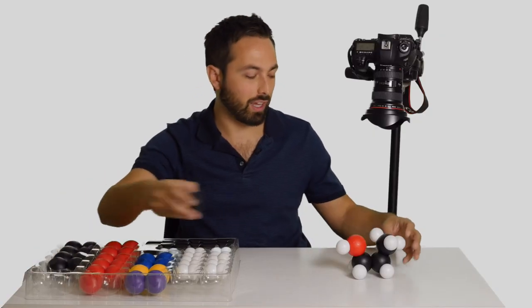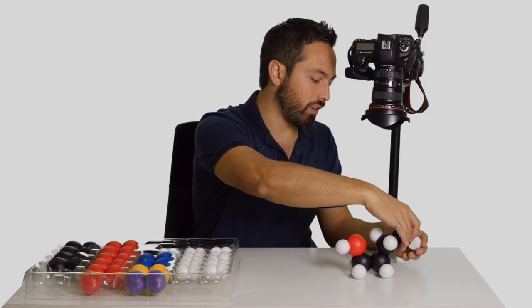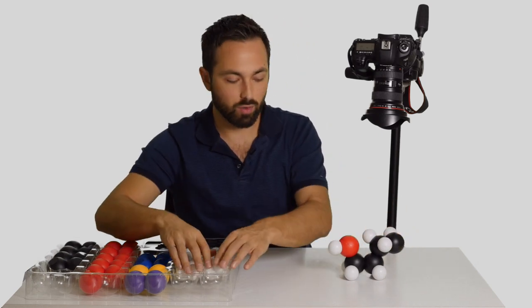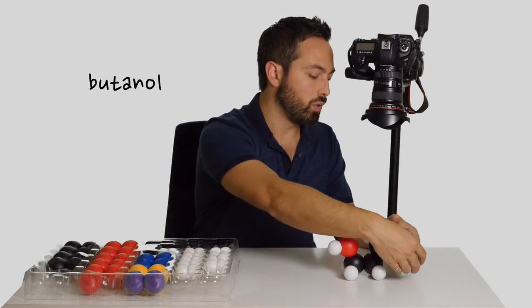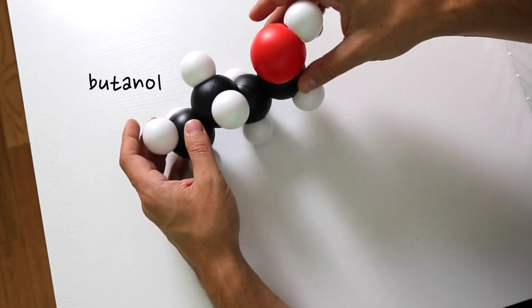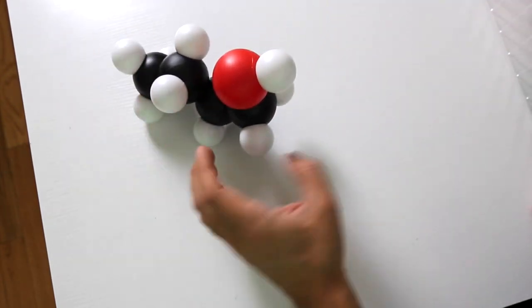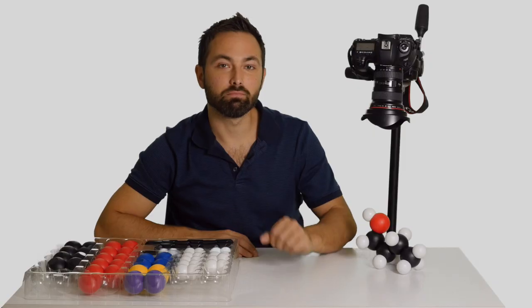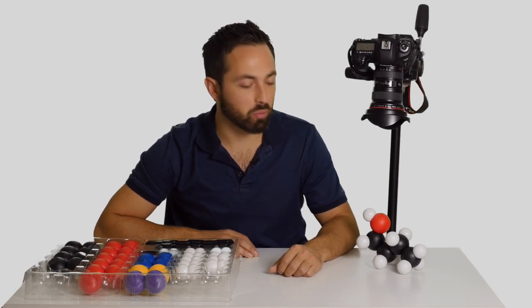We could add another carbon and we would have butanol. So these are the alcohols. Another group of molecules you can make with synanoms.